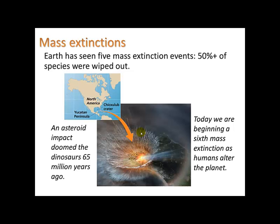There have been about five mass extinctions in Earth's history, where 50% or more of the species living at that time were wiped out. One of the most important and well-known is an asteroid impact that happened 65 million years ago, off the Yucatán Peninsula in Central America, and this is largely accepted.